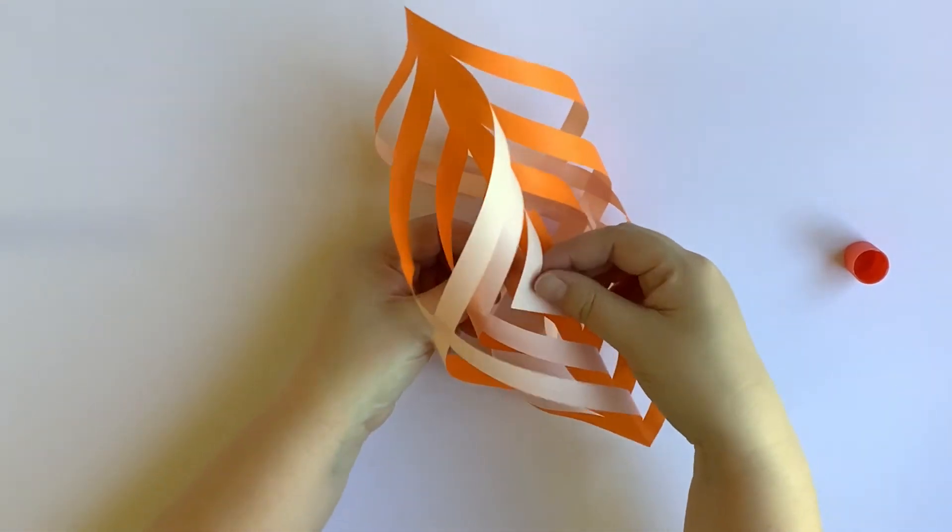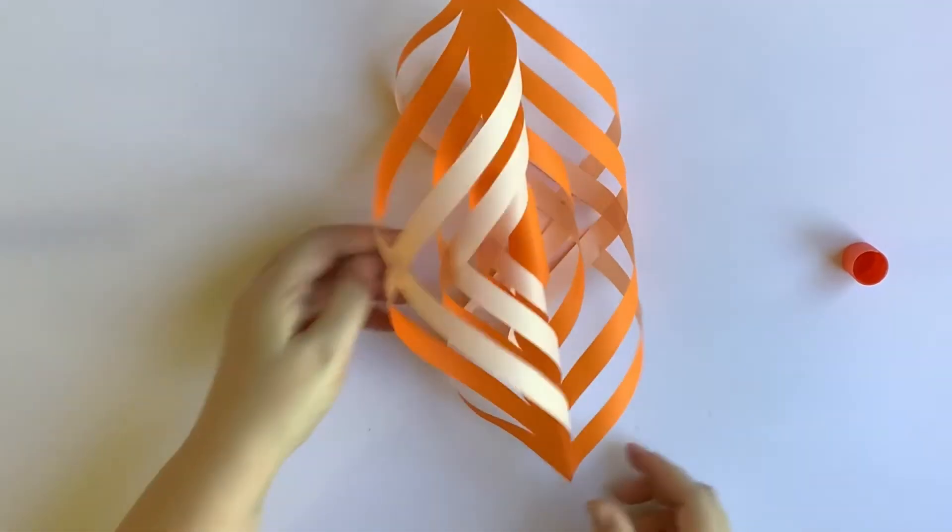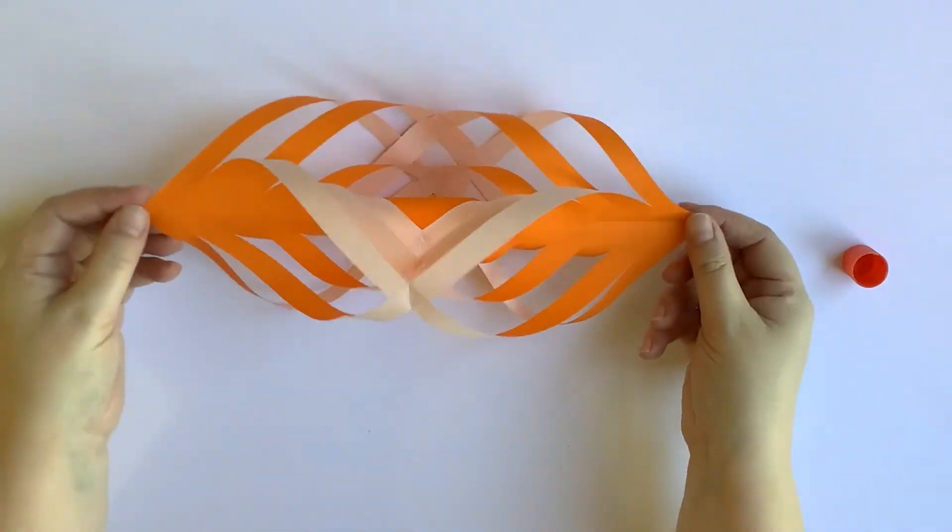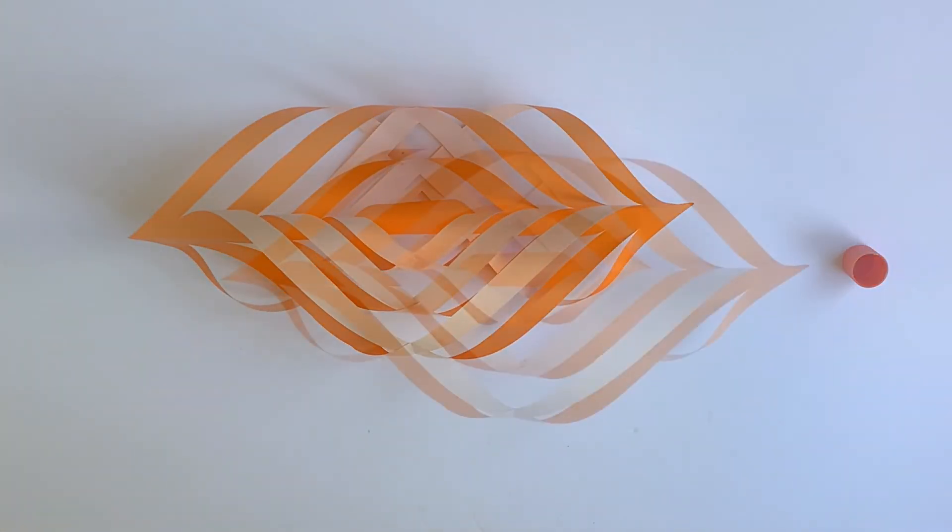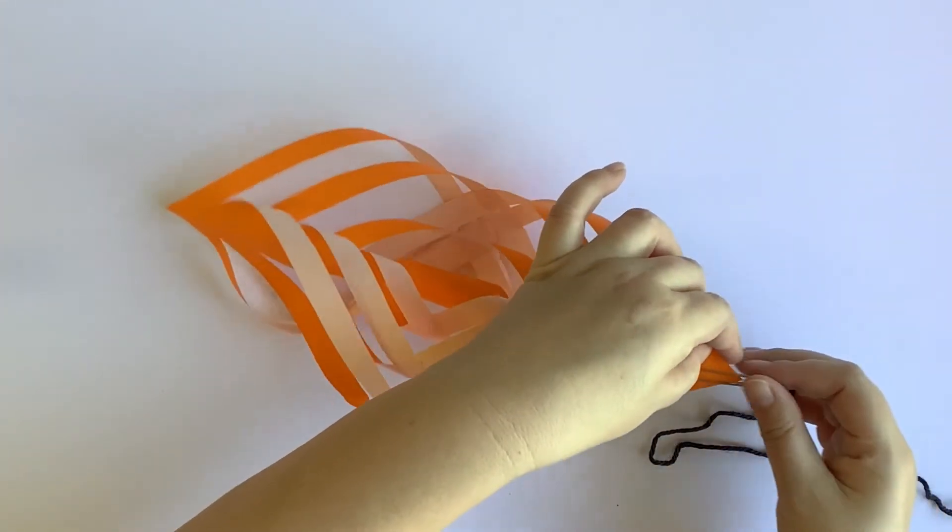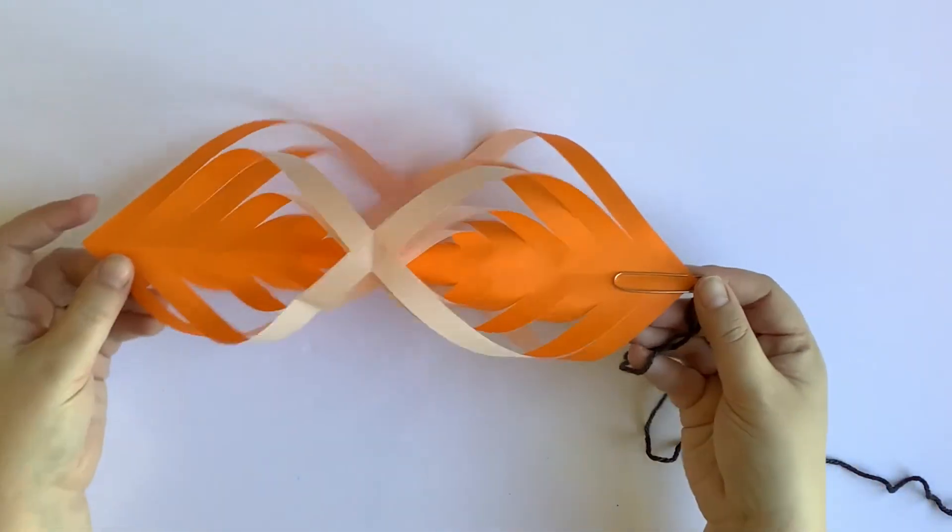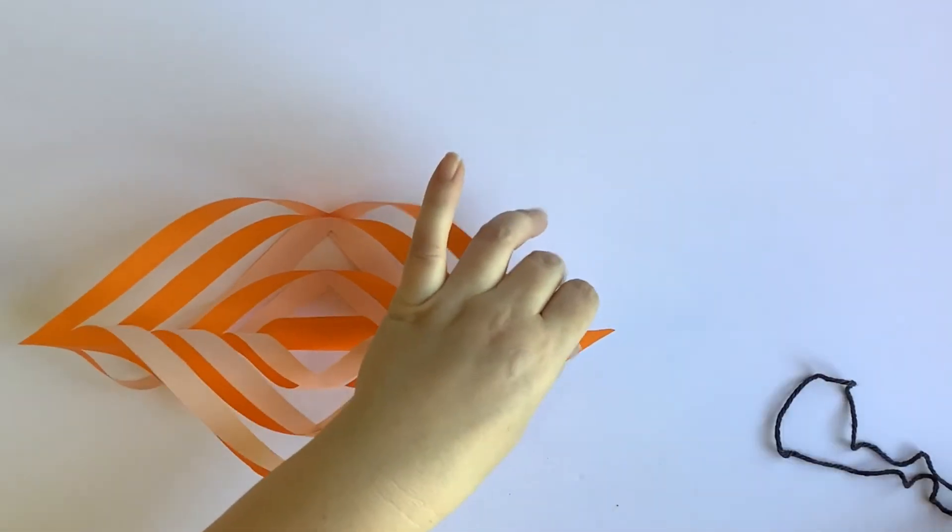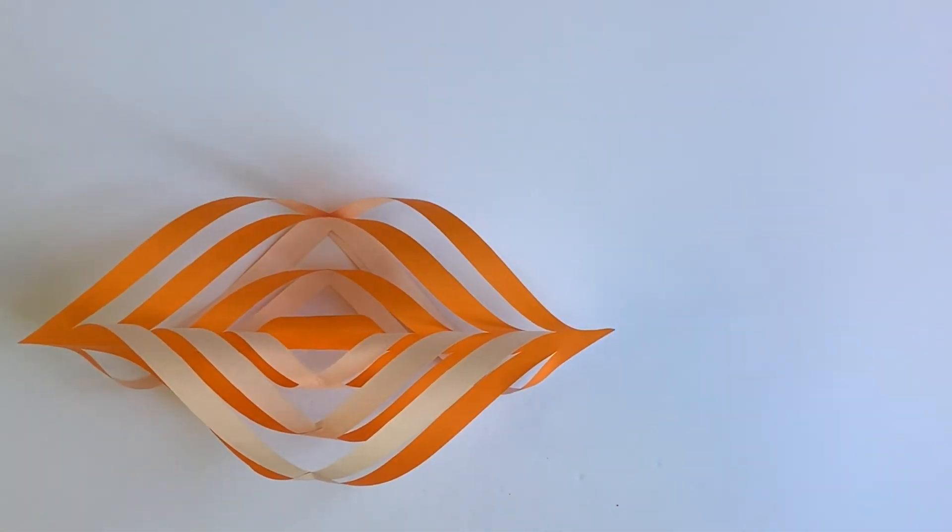And now your wind catcher is complete. Now that you've finished your wind catcher you're going to want to have some way to suspend it. You can do this easily using a paper clip and a piece of yarn and clipping it to the top of the wind catcher. Or you can do what I'm going to do and use a piece of thread and a blunt needle.